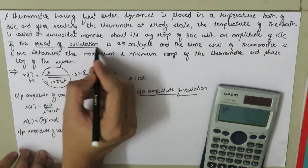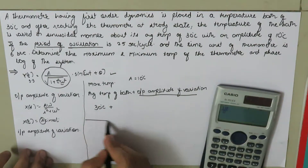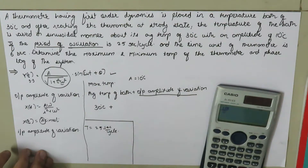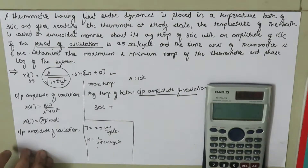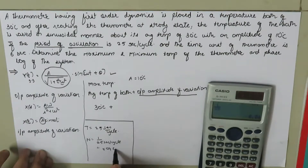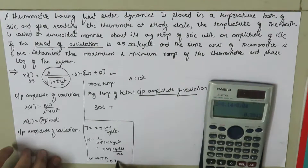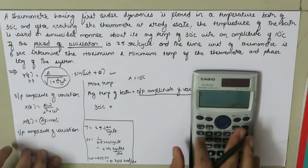We have the time period of variation, so we calculate omega. The time period is 25 seconds per cycle, so frequency n equals 1 over 25, which is 0.04 cycles per second. Omega equals 2*pi*n, so omega equals 2 times 3.14 times 0.04, giving omega equal to 0.2512 radians per second.